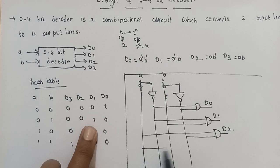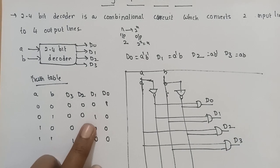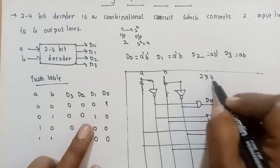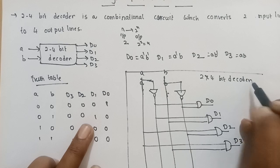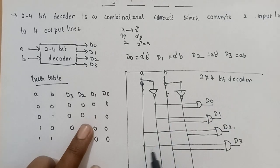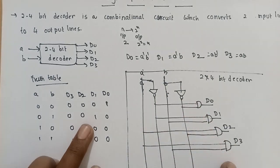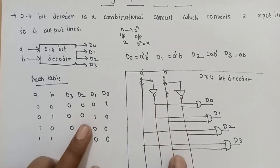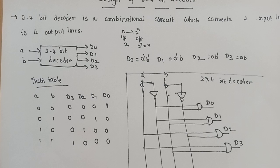D3 output is AB. This is the complete circuit diagram for the 2-to-4 bit decoder. The 2-to-4 bit decoder is a combinational circuit which converts 2 input lines to 4 output lines.